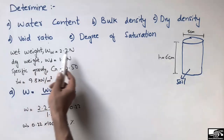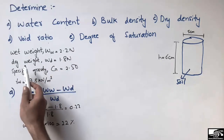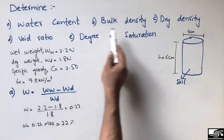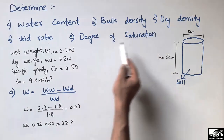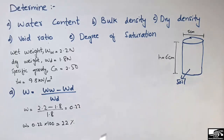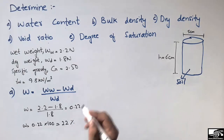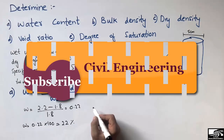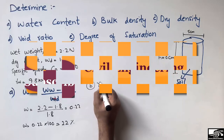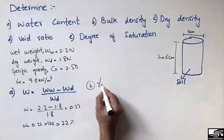Having the wet weight of 2.2 and the dry weight of 1.8, all these parameters are important. These parameters are used in soil mechanics and also in some field tests. The second one is the bulk density. Bulk density is represented by gamma B.